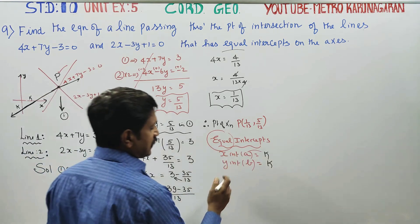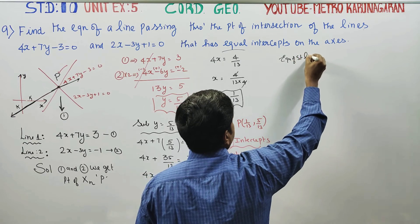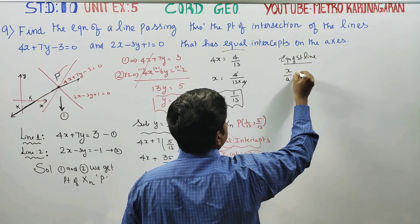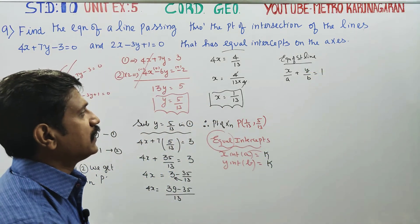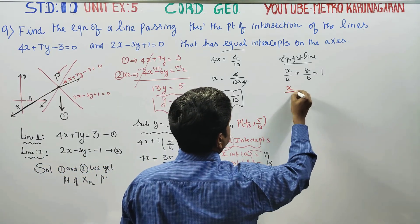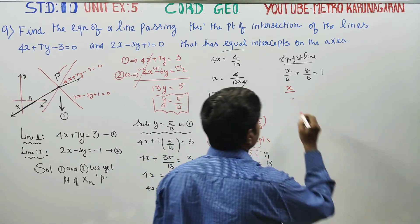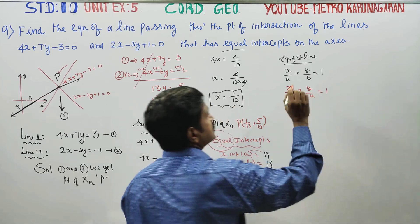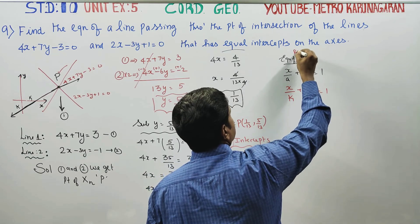The equation of a straight line using the intercept form is: x by a plus y by b equals 1. Substituting equal intercepts (a equals b equals k), the equation becomes x by k plus y by k equals 1. This is the equation of the required straight line.